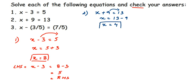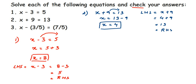Now we verify: LHS is x plus 9, and substituting x equal to 4 gives 4 plus 9, which equals 13. Since 13 is the RHS, LHS equals RHS, so the answer is correct. Now for the third question: x minus 3 by 5 is equal to 7 by 5.